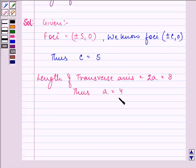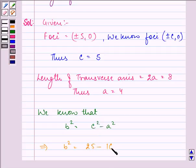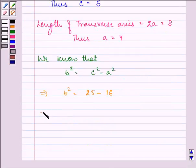With the help of the values of c and a, we can find the value of b. We know that b square is equal to c square minus a square. So we have b square is equal to c square is 25, a square is 16. That further implies that the value of b square is equal to 9.